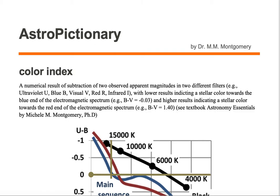A color index is a numerical result of subtraction of two observed apparent magnitudes in two different filters, for example ultraviolet U, blue B, visual V, red R, and infrared I.